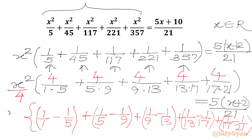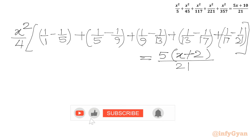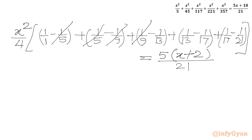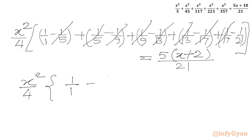Outside this bracket we write x squared over 4. The RHS is equal to 5 times (x plus 2) divided by 21. Now we cancel minus 1 over 5 with plus 1 over 5, minus 1 over 9 with plus 1 over 9, 1 over 13 minus 1 over 13, and 1 over 17 minus 1 over 17. So only 1 over 1 and minus 1 over 21 remain in the bracket. We write x squared over 4 times the bracket 1 over 1 minus 1 over 21, and the RHS is 5 times (x plus 2) over 21.